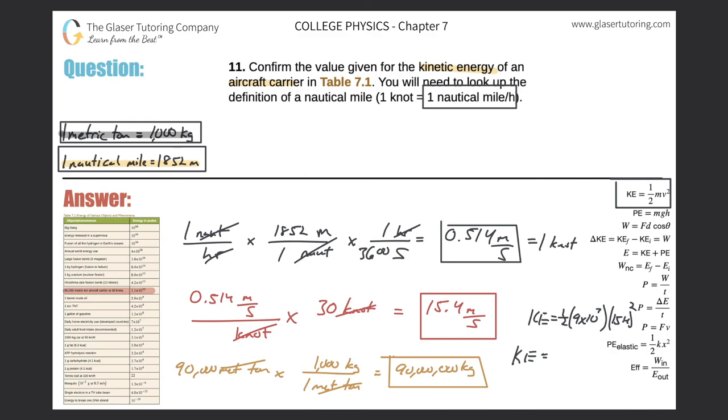So the kinetic energy now should simply be, let's plug it into the calculator, 0.5 times 9 times 10 to the 7 times 15.4 squared. And it becomes 1.06. And if we round, it should be 1.1 times 10 to the 10 joules. And does that match the value over here in the table? Beautifully.